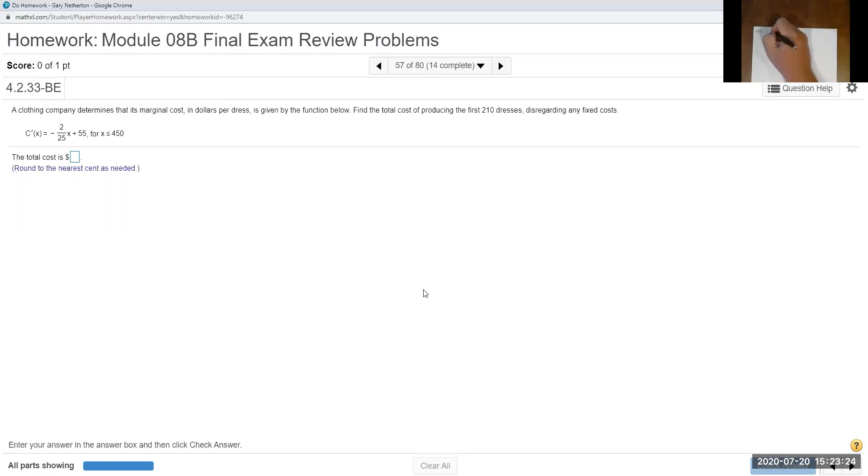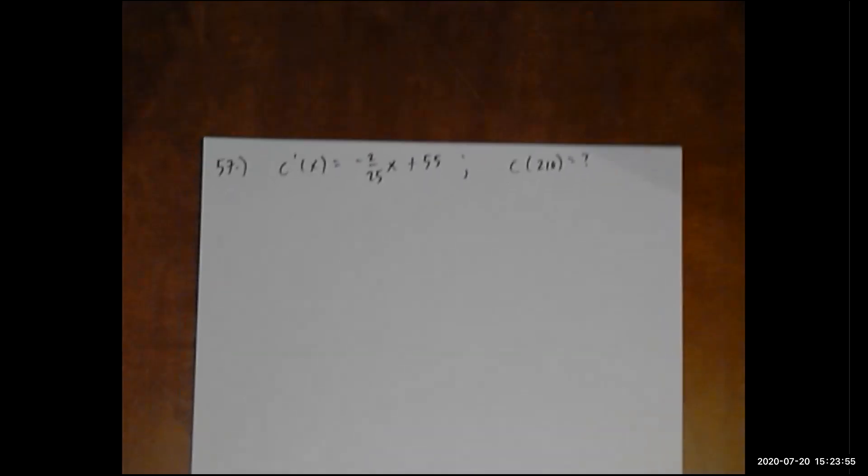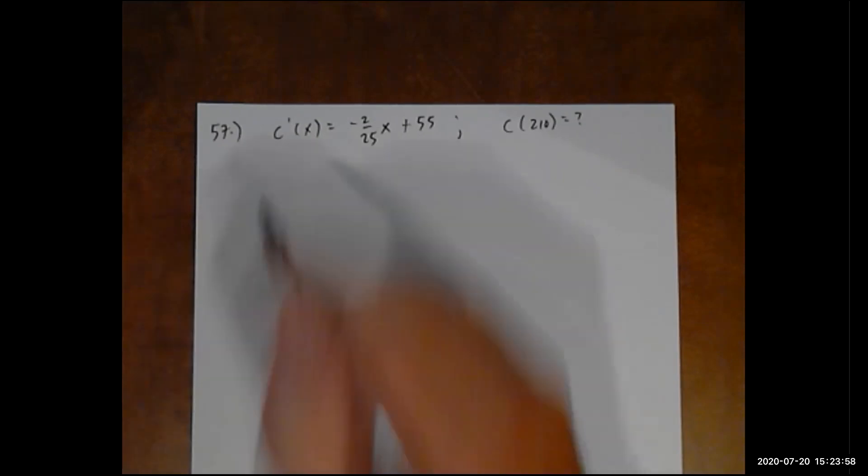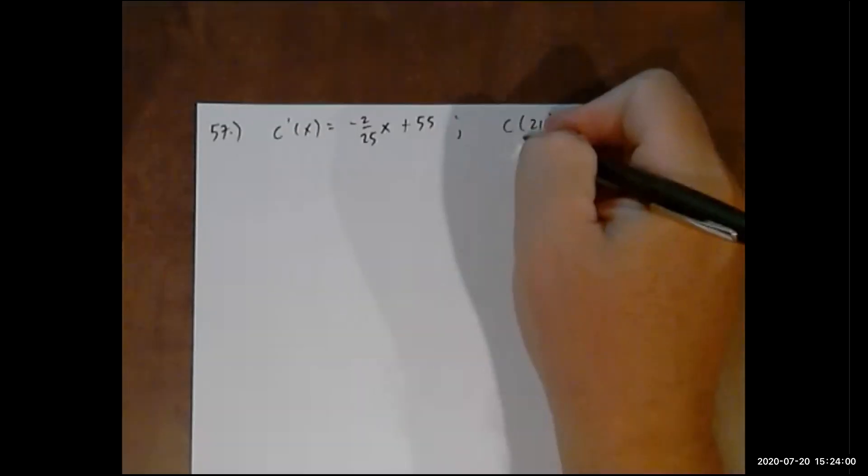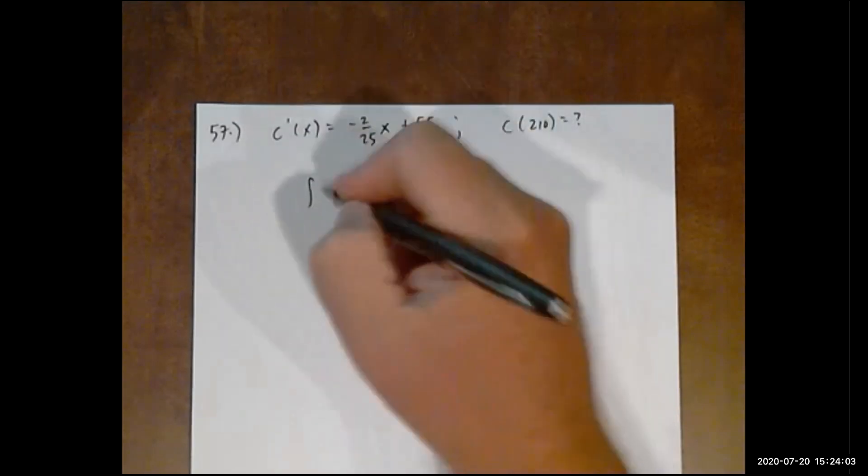Problem 57. The derivative of C(x) is negative 2 over 25x plus 55, and we're going to figure out what C(210) is. They give me the derivative, I want the initial function, so I'm going to take the integral.